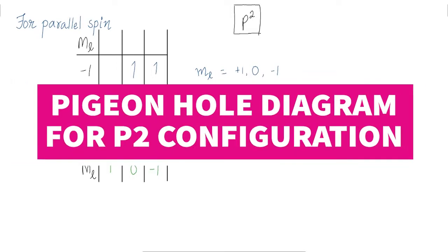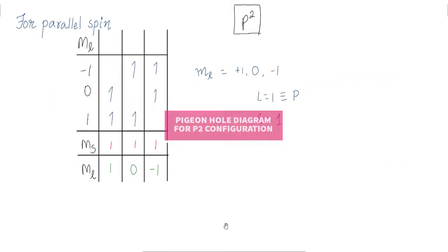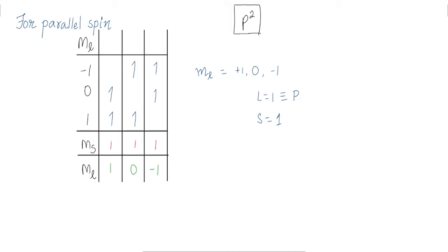Hello everyone, welcome to Mind Maps. In this video lecture we are discussing the pigeonhole diagram for the p² configuration. We'll derive the term symbols, and for the ground state we'll be doing all these combinations. For p², you know there are two electrons.